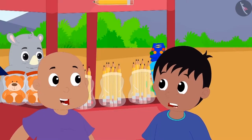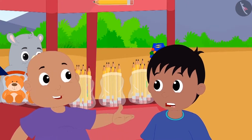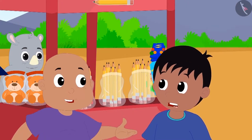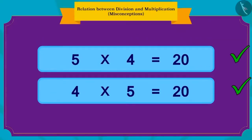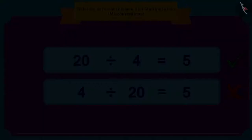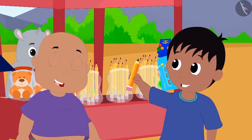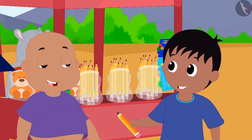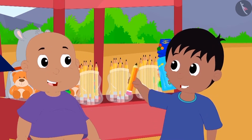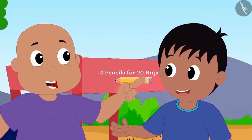Bablu laughed and explained to Raju that even though division and multiplication have a relationship, the way we do for multiplication, we cannot write division sums by changing the places of numbers. Raju took Bablu's pencil from him and said that with that pencil, he would practice his maths skills and become an expert at it. Both of them burst out laughing.